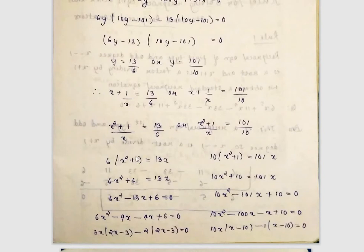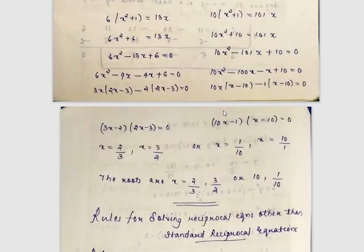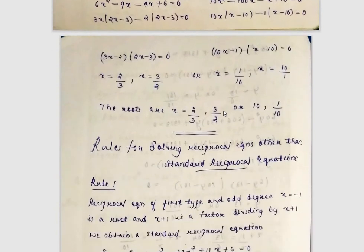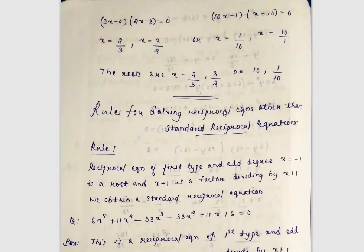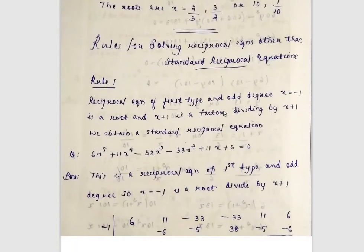If we consider the values of x, we take the equation and check that the reciprocal values also satisfy it — for example, x = 2/3 and 3/2, or x = 1/10 and 10/1 are paired roots. This is how the standard reciprocal equation is solved.